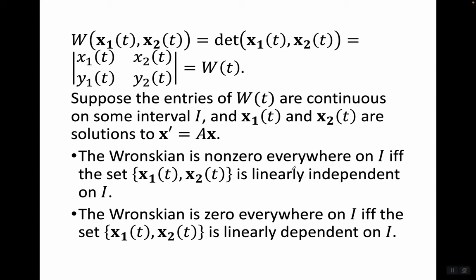Suppose the entries of A(t) are continuous on some interval I, and x1(t), x2(t) are solutions to x' = Ax. The Wronskian is nonzero everywhere in I if and only if the set {x1(t), x2(t)} is linearly independent on I. And the Wronskian is zero everywhere on I if and only if the set {x1(t), x2(t)} is linearly dependent on I.